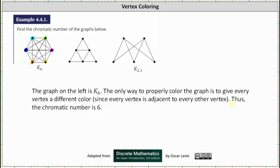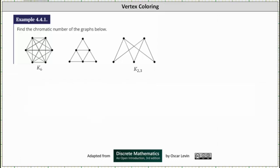Sometimes when we talk about vertex coloring, we use numbers instead of colors, where each number represents a different color. Let's find a proper coloring with the smallest number of colors for the middle graph. Label the top vertex one. This vertex is adjacent to two other vertices, so we label them two and three. The vertex in the middle of the bottom row can be labeled one since it's adjacent to vertices two and three. The vertex on the left is adjacent to one and two, so we label it three. The vertex on the right is adjacent to one and three, so we label it two. Three is the smallest number of colors needed; the chromatic number is three.